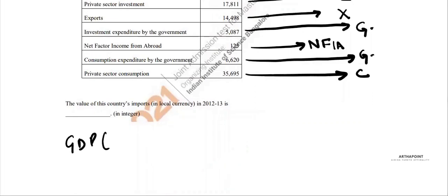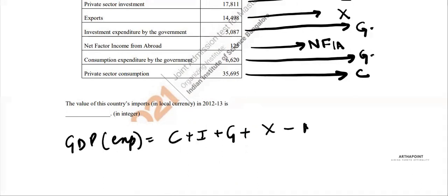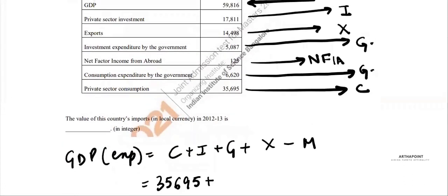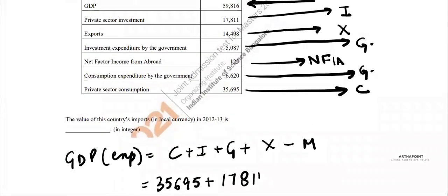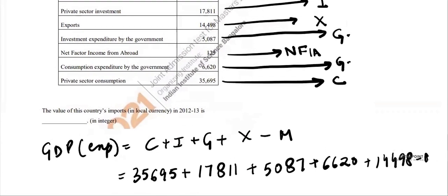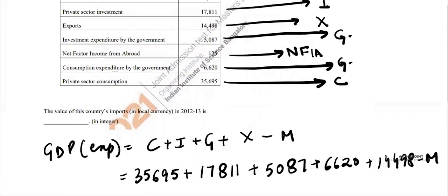Now I'll use the formula. GDP using the expenditure method is C + I + G + X - M. Consumption is 35695, investment is 17811, government expenditure is 5087 plus 6620, and exports are given as 14498, minus imports.